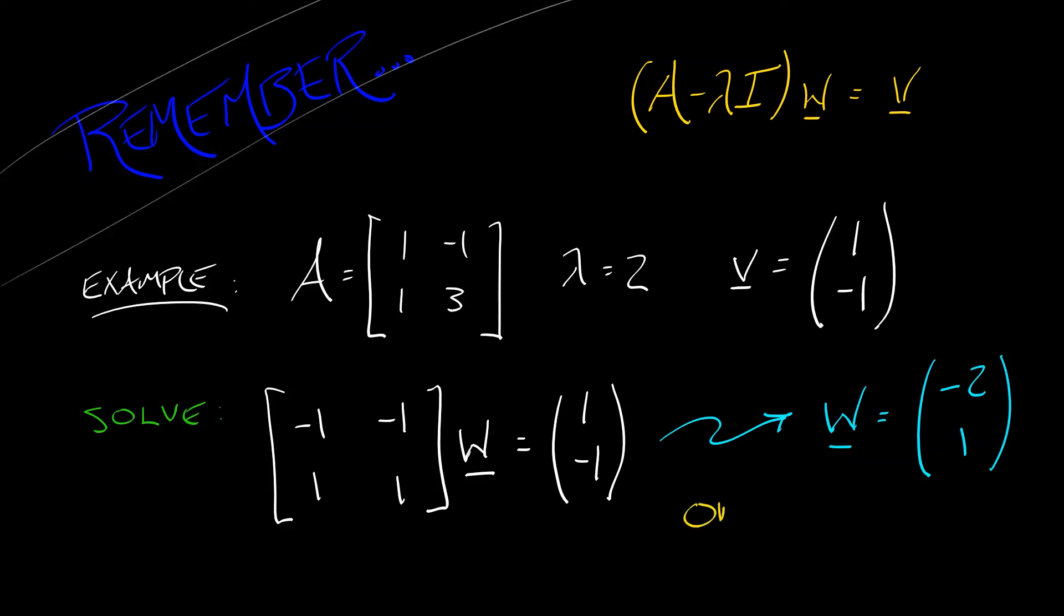Good. Or I could have chosen (-1, 0). That would work just as well. There are multiple solutions to this equation. In fact, there's an entire one-dimensional affine space of generalized eigenvectors. So generalized eigenvectors, not unique. But, and I hear you saying this in your head, why? Who cares? Why are we going to all this trouble?